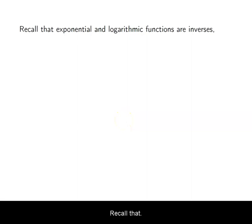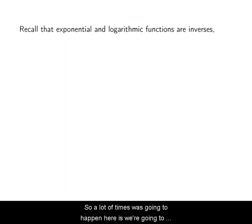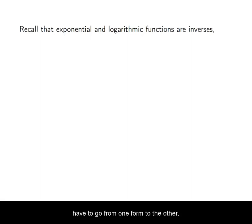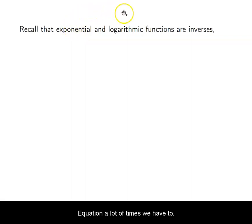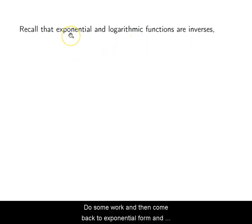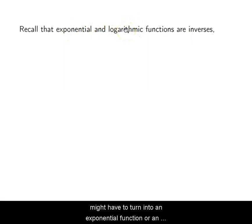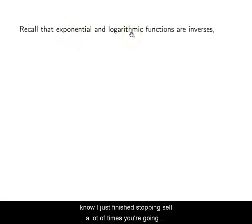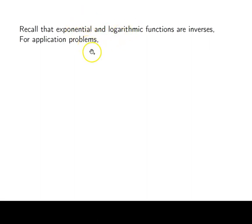Recall that exponentials and logarithms are inverses. So a lot of times what's going to happen here is we're going to have to go from one form to the other. In order to solve an exponential equation, a lot of times we have to take its logarithmic form, do some work, and then come back to its exponential form. Same thing with logarithmic forms — we might have to turn it into an exponential equation, do some work, and then turn it back. So a lot of times we're going back and forth between the two forms in order to solve.